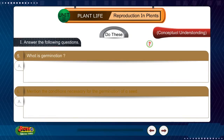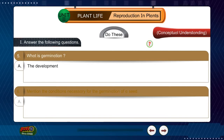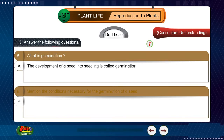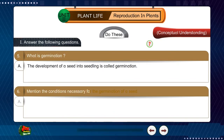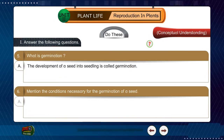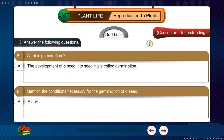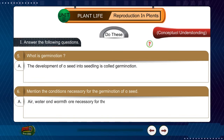Question 5: What is germination? Answer: The development of a seed into a seedling is called germination. Question 6: Mention the conditions necessary for the germination of a seed. Answer: Air, water, and warmth are necessary for the germination of a seed.